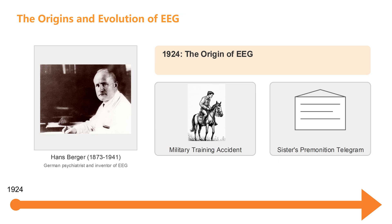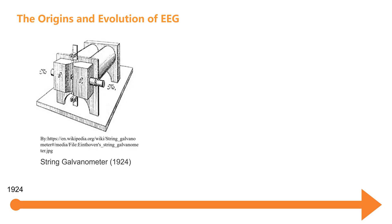During military training, Berger fell from horseback and nearly lost his life, while his sister, far away, felt uneasy and sent a telegram. This coincidence sparked Berger's curiosity: could the brain emit some kind of signal? This seemingly supernatural question eventually led to concrete scientific breakthroughs. 1924 marked the beginning of modern EEG, when Berger first successfully recorded human brain electrical signals.